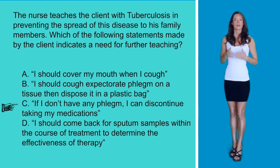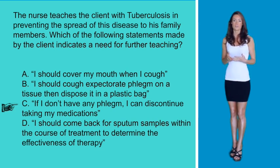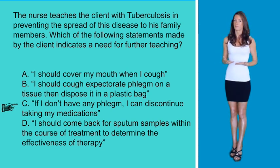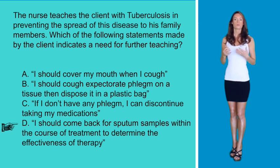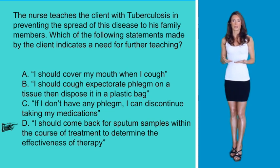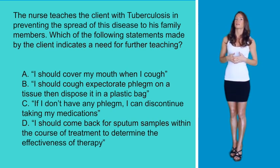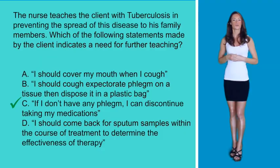However, option C — 'If I do not have any phlegm, I can discontinue taking my medications' — is incorrect. The client should continue to take his anti-TB medications regularly and should complete the course of treatment even if the symptoms have subsided and even if the AFB results come out negative. And D, 'I should come back for sputum samples within the course of treatment to determine the effectiveness of the therapy,' would also be correct because the treatment may need to be modified or changed. So the only incorrect statement made by the client was option C, making this the final correct answer.